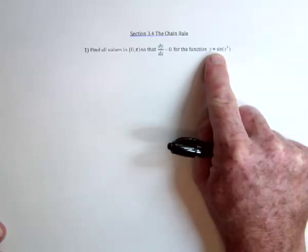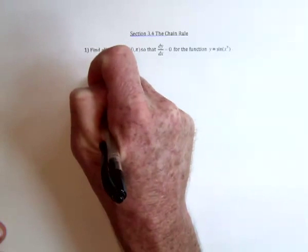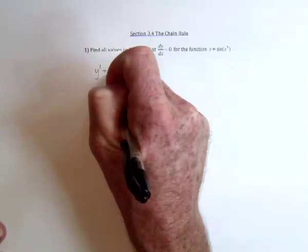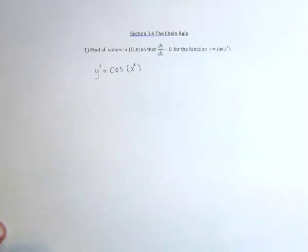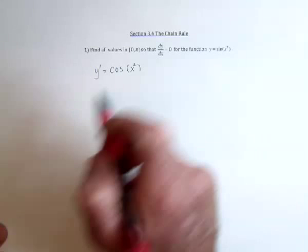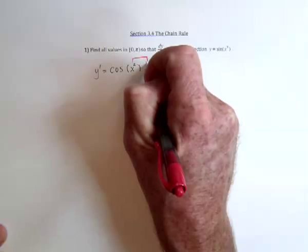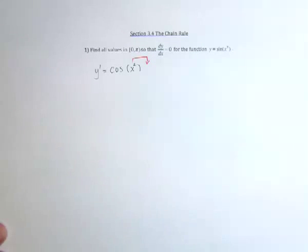So with the sine function being the outer function, we take the derivative of that first. So we'll have the derivative of sine is cosine. And the x squared is left alone. Then the chain rule says, now take the derivative of the x squared and multiply with that.